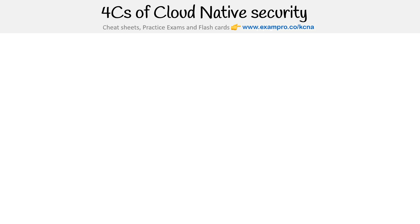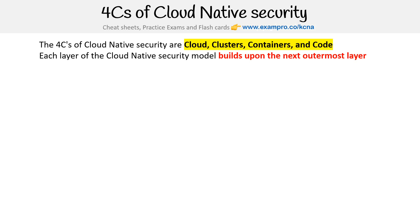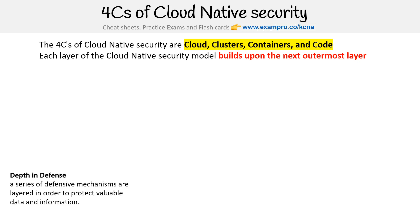This is Andrew Brown from ExamPro. We are looking at the four C's of cloud native security, which is cloud, clusters, containers, and code. That order does matter because each layer of cloud native security builds upon the next outermost layer. We could describe this generally as defense in depth.